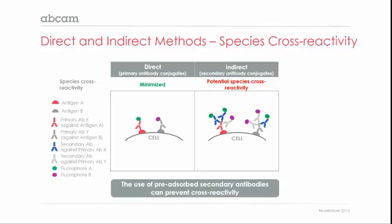Pre-absorption means passing the secondary antibody solution through a column containing serum proteins from the cross-reactive species. Antibodies that may cross-react will stick to those proteins, and only highly specific antibodies will flow through. If you still need to use a secondary antibody and are worried about cross-reactivity, you should consider using pre-absorbed secondaries. This will be stated in the product title as either 'pre-absorbed' or 'cross-absorbed,' and the datasheet will list the species with which it minimally cross-reacts.